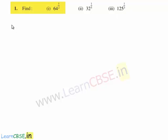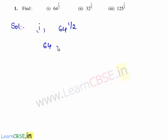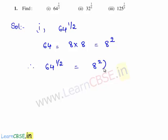Now let us solve the first bit. The first bit given is to find 64 raised to the power of 1 by 2. As we know, 64 is a perfect square. 64 can be written as 8 times 8, which is equal to 8 raised to the power of 2. Therefore, 64 raised to the power of 1 by 2 is written as 8 squared, whole raised to the power of 1 by 2.